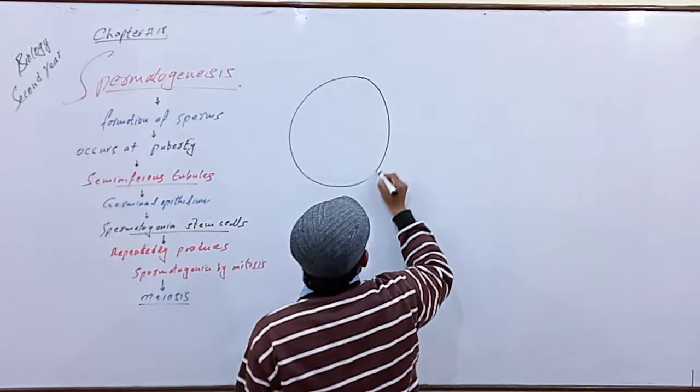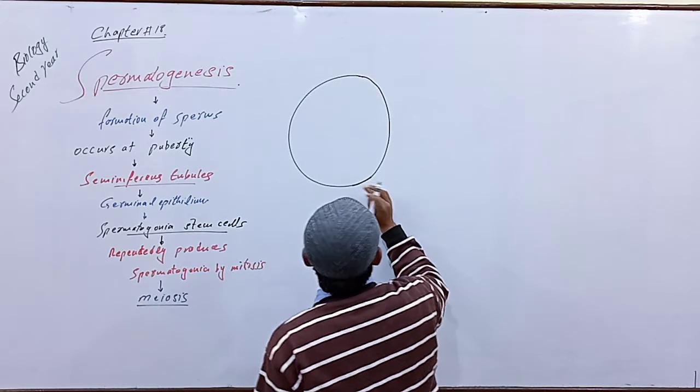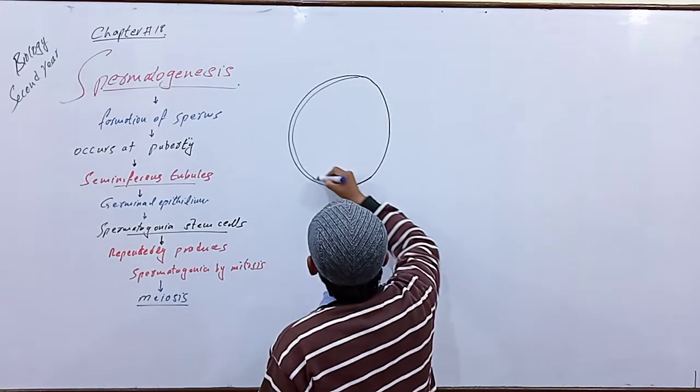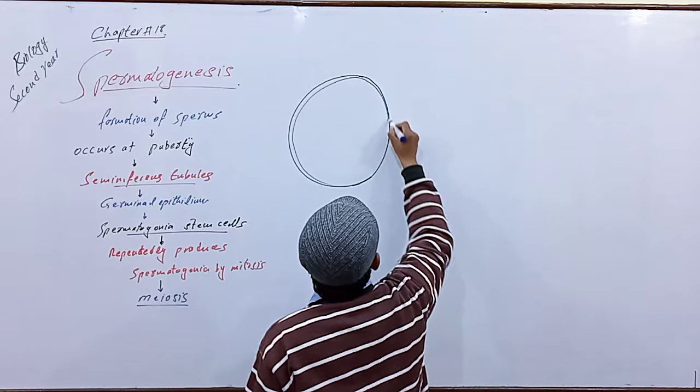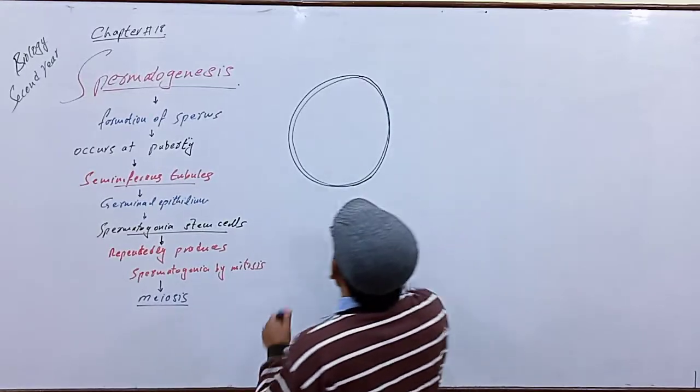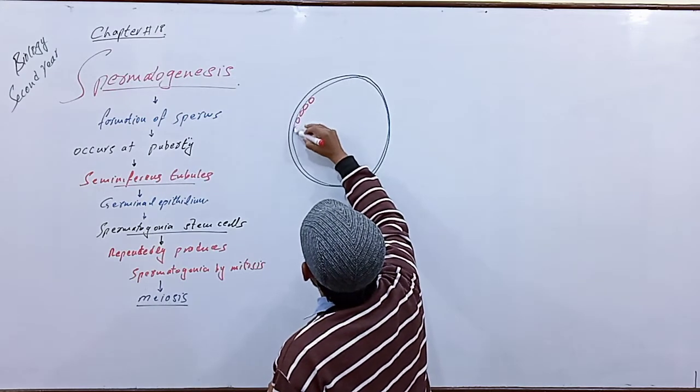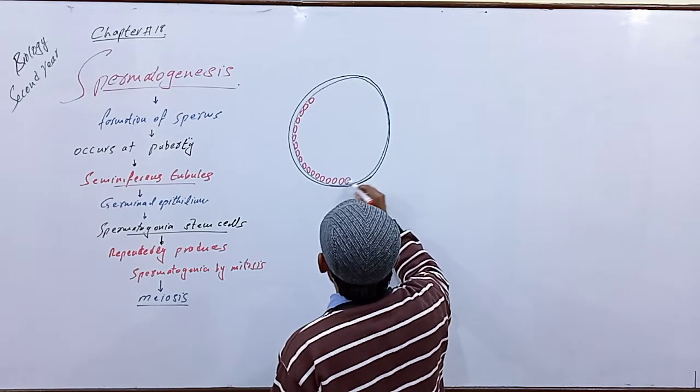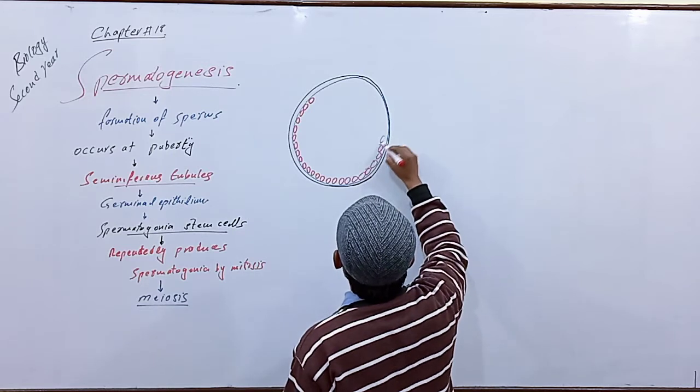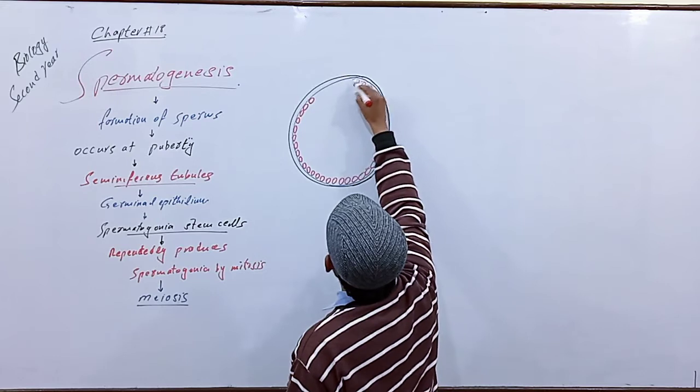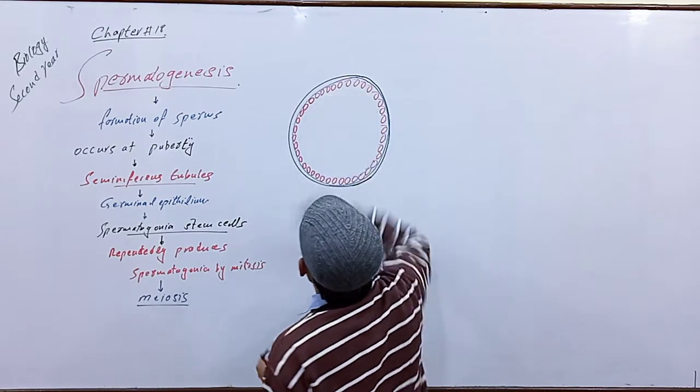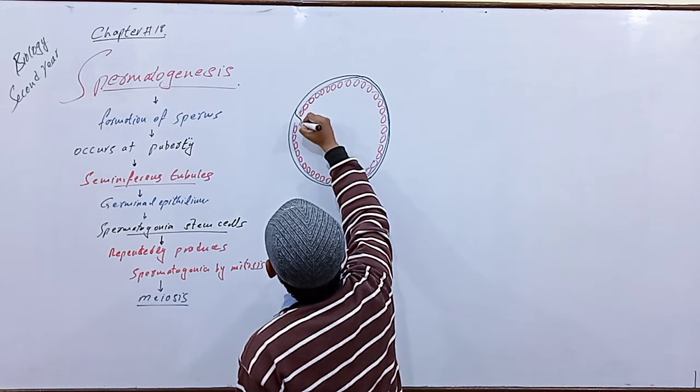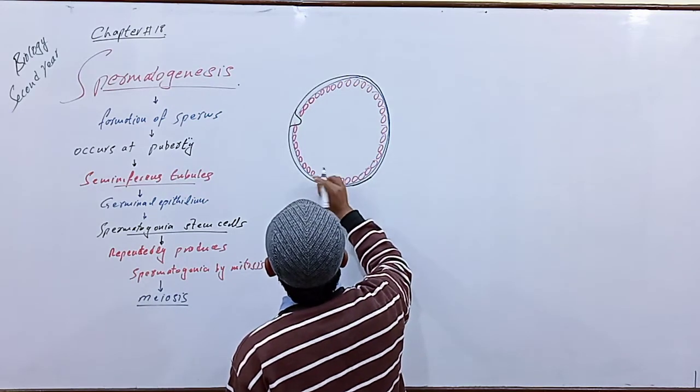Suppose this is a seminiferous tubule. If we make an internal cross-section of the seminiferous tubule, the first layer has a basement membrane. This membrane is repeatedly renewed by mitosis, producing the spermatogonia layer. At some points, Sertoli cells are found.